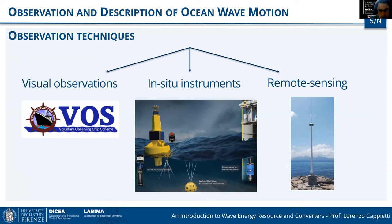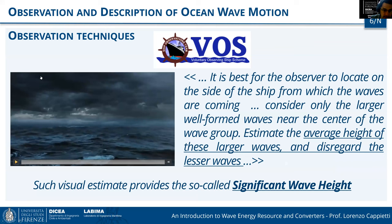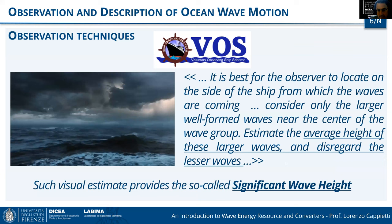There are different possibilities for observing ocean waves. Starting from visual observations — which seem trivial but everything starts from them — then later in-situ measurements, and more recently remote sensing. Visual observations started centuries ago and have an impact even on present analysis of in-situ measurements and remote sensing.